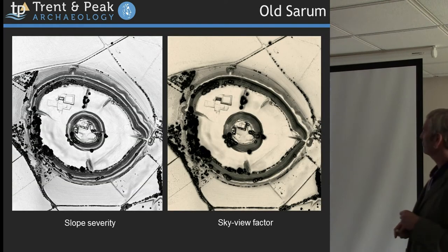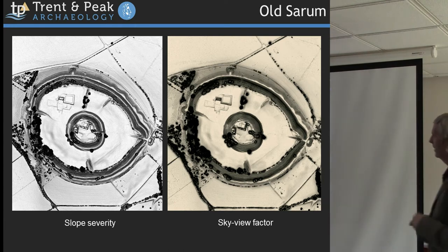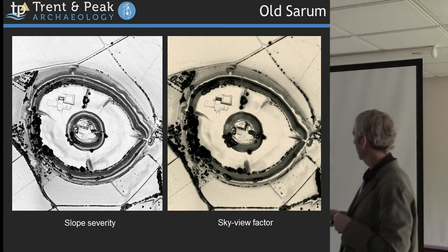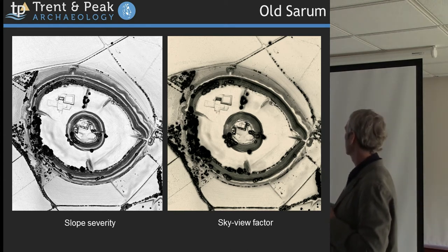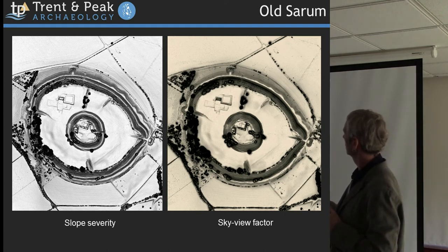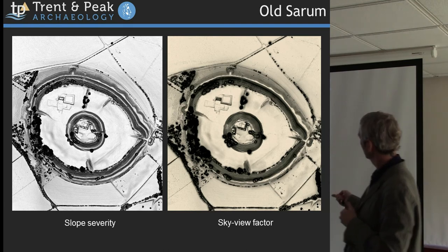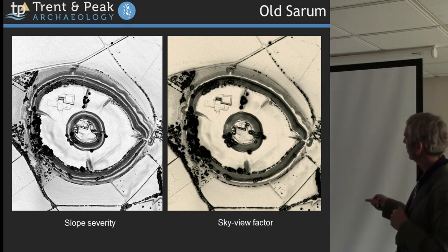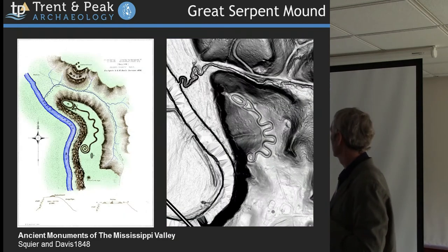Applying it to something a little different: Old Sarum. This is just freely available LiDAR data — half-metre multiple return data. That's the slope severity mapping, and that's the sky view factor. In a plan view it can be difficult — that's actually the very bottom of the moat, because it's flat and there's no slope. That's the top of the bank. You get the 3D model and it's somewhat easier. Modelling the steepness of the slope gives you a better representation at that scale.